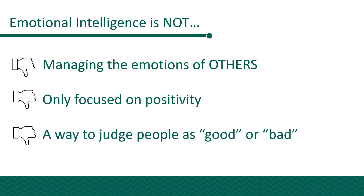It's also important to talk about what emotional intelligence is not. It's not being able to control the emotions of others. We can only manage our own emotions. We can identify the emotions of others, but we can't manage them. Emotional intelligence is not only focused on positivity — we have to think about all forms of emotions and address them as needed. And emotional intelligence is also not a way to judge people as good or bad. There are plenty of good people who don't have a good sense of emotional intelligence, and there are also people considered bad who have an excellent sense of emotional intelligence.